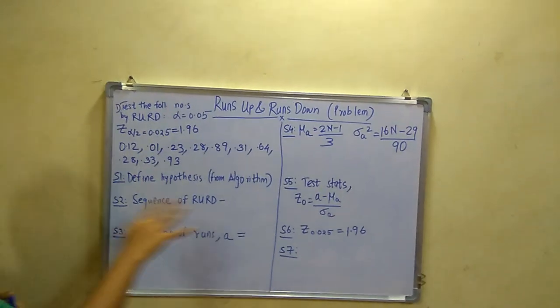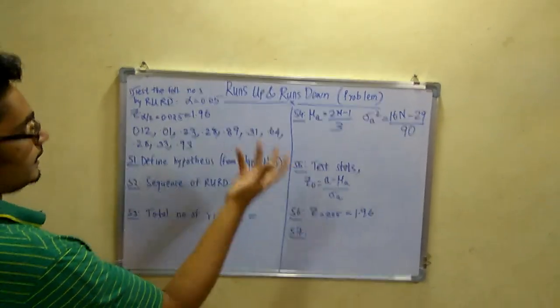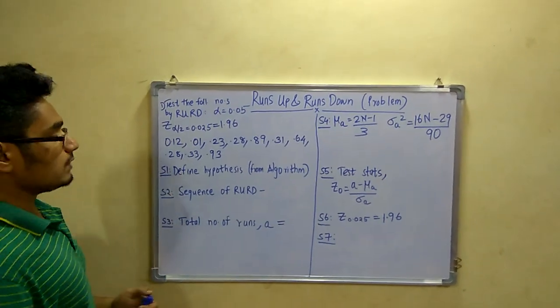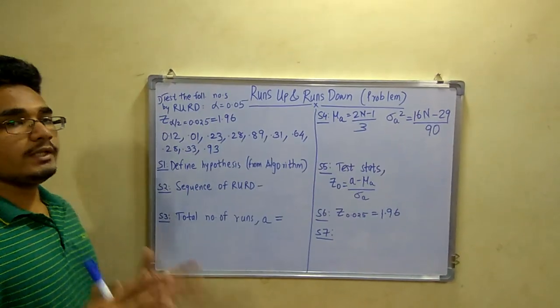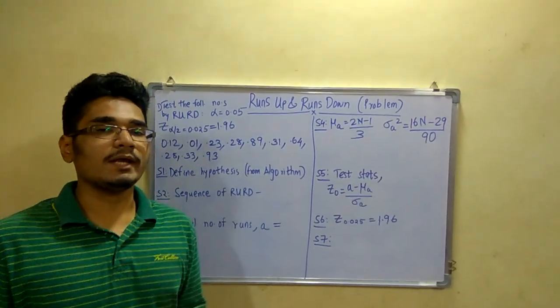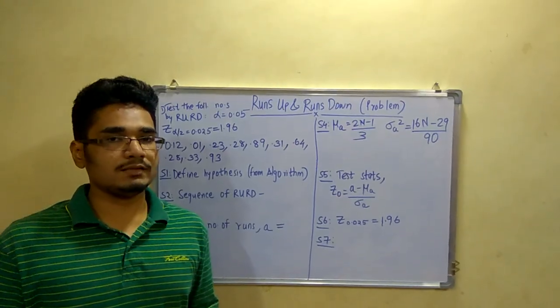The first step is to define the hypothesis from the algorithm. Next you have to write the sequence of RURD, that is the Runs Up Runs Down. In the algorithm I have already mentioned that for Runs Up Runs Down the sequence is plus minus sequence.